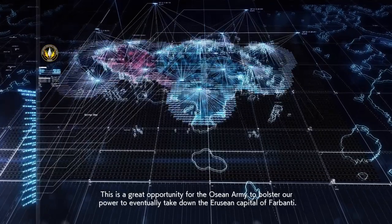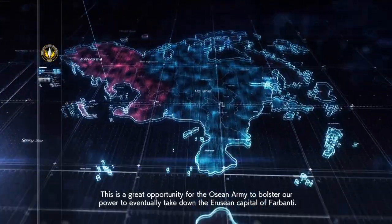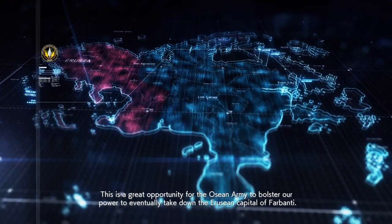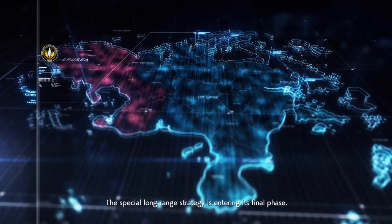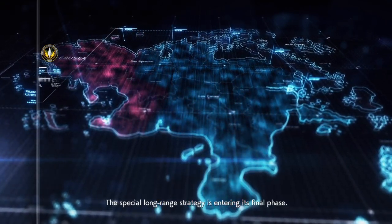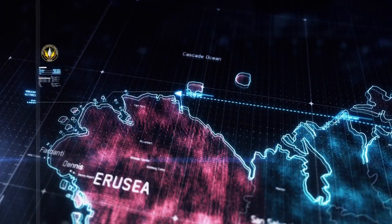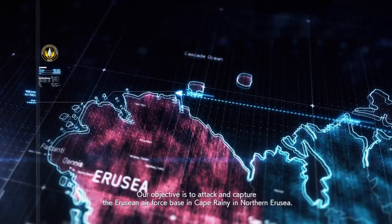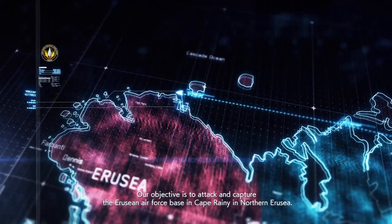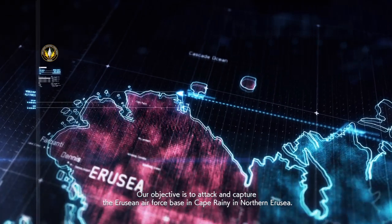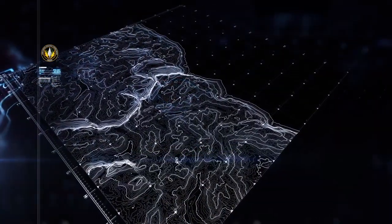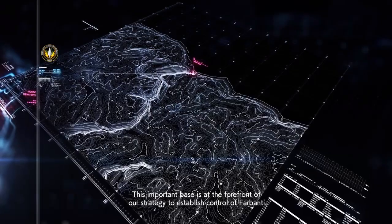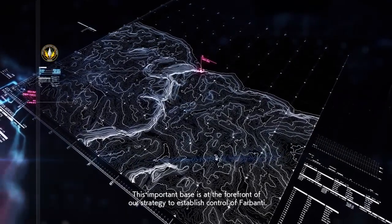This is a great opportunity for the Osean army to bolster our power to eventually take down the Erusean capital of Farbanti. Our objective is to attack and capture the Erusean Air Force Base in Cape Rainey in Northern Erusea. This important base is at the forefront of our strategy to establish control of Farbanti.